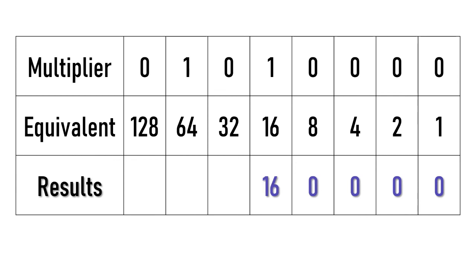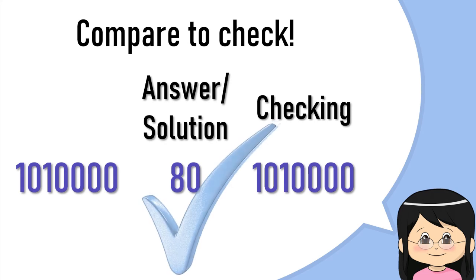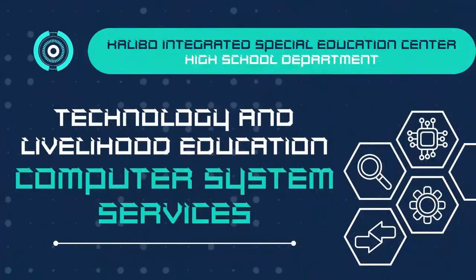What is the result? Very good! 64 plus 16 is equal to 80. And there you have it! I hope you enjoyed and learned a lot today. Don't forget to like, subscribe, and hit the notification button for more educational videos.